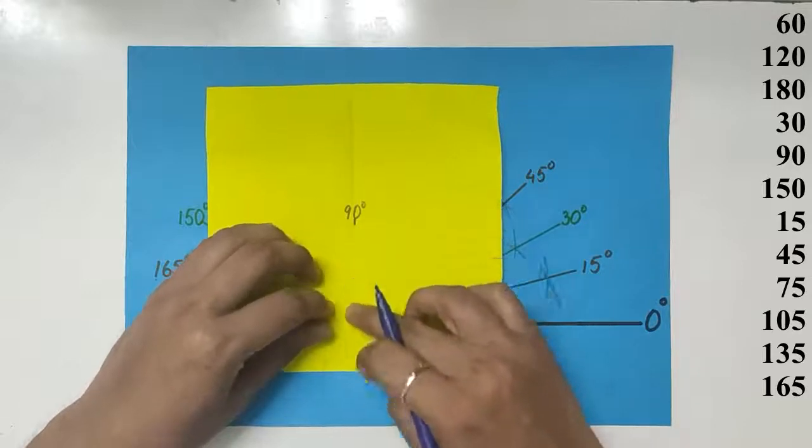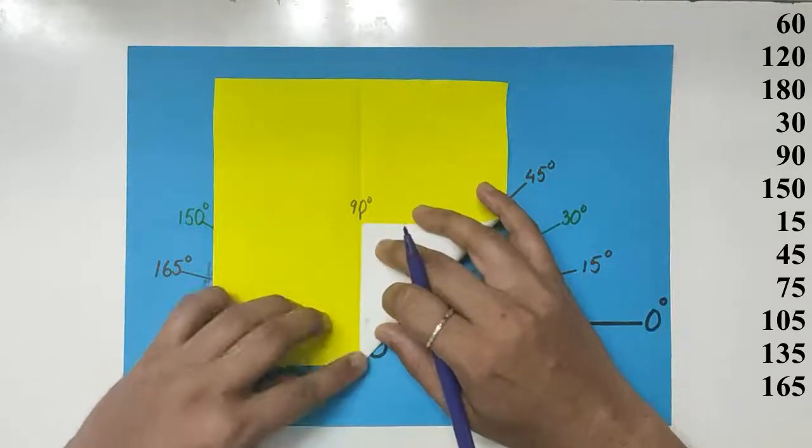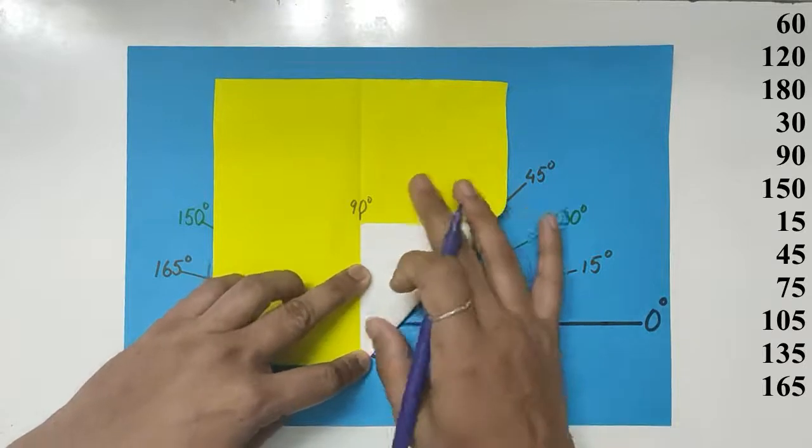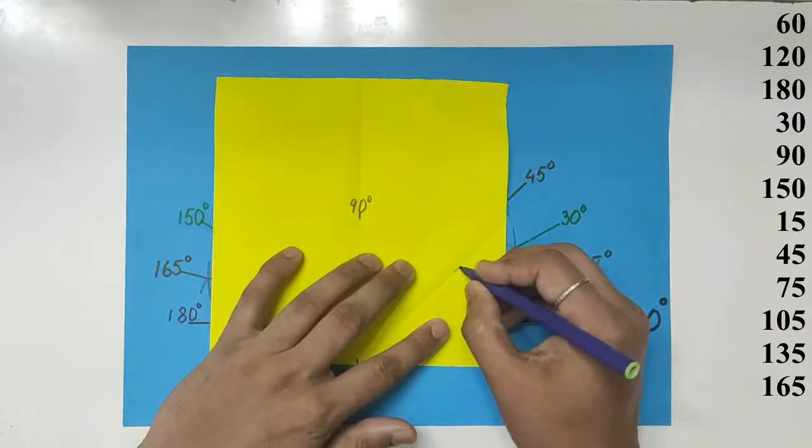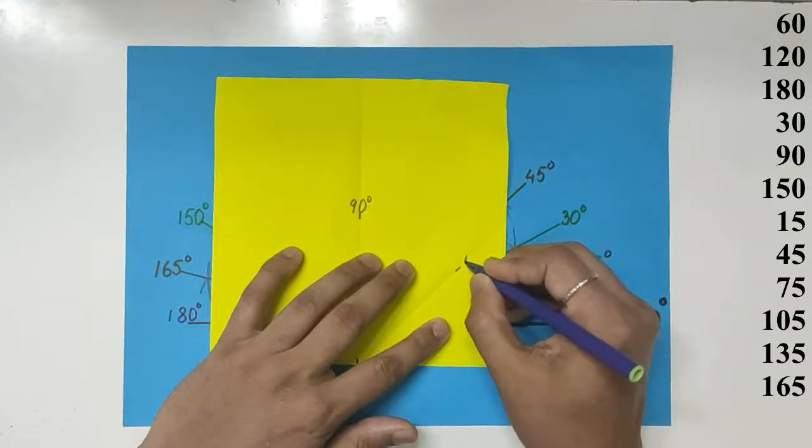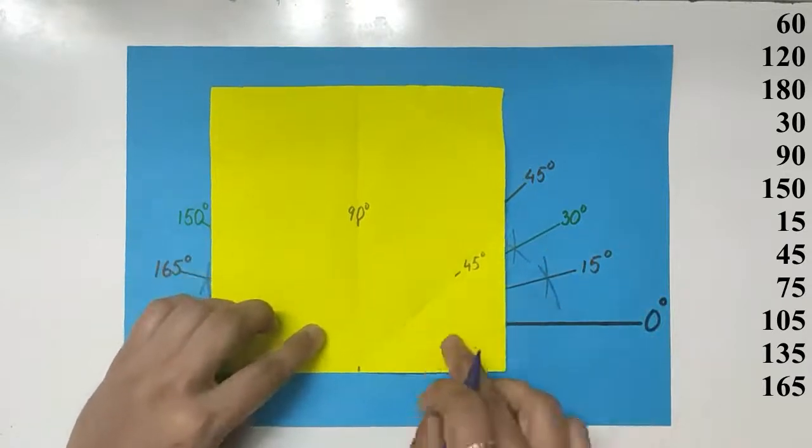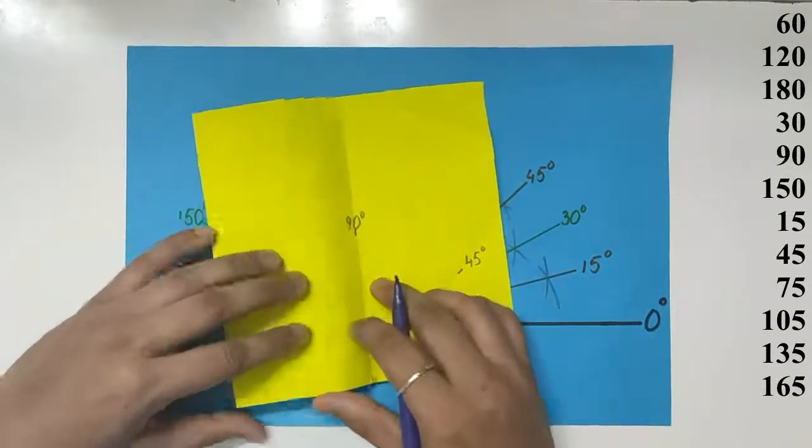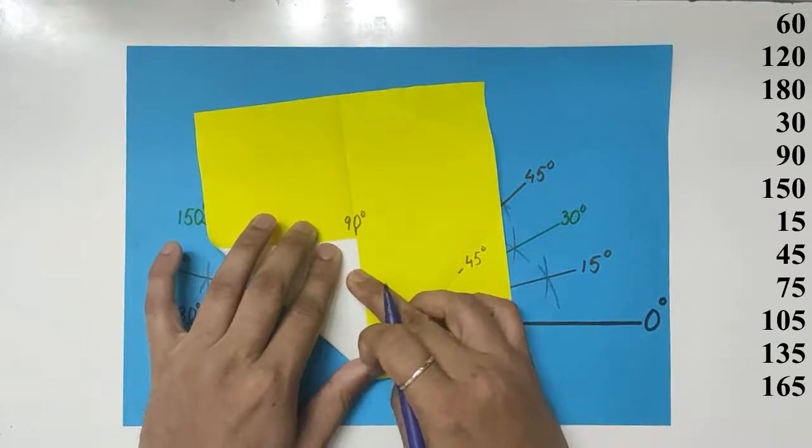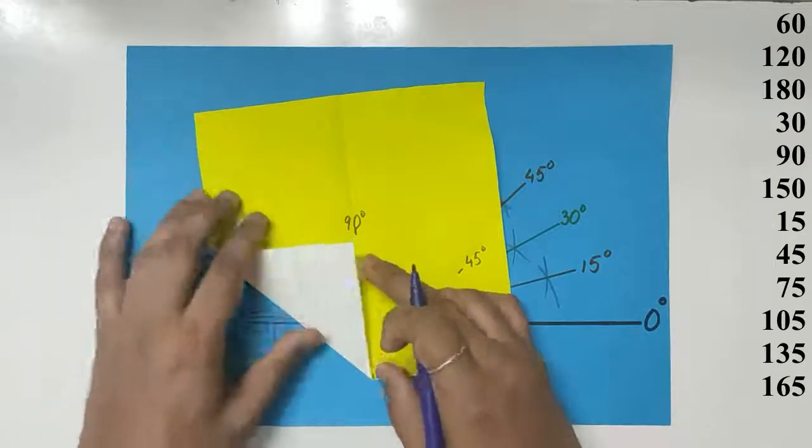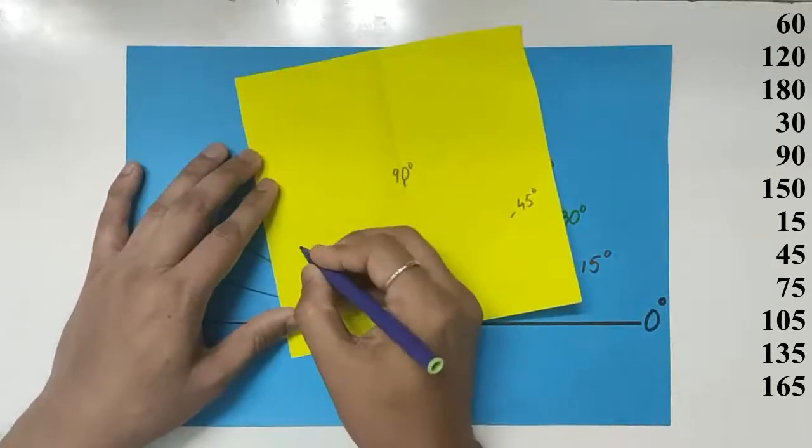We will get 45 now by bisecting 90. That's 45. In the same way, we will do the other side to get 135. That's 135 degrees.